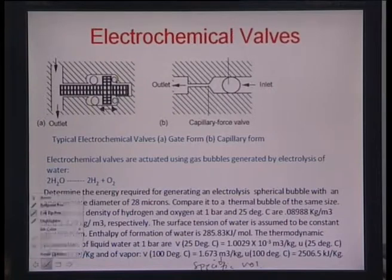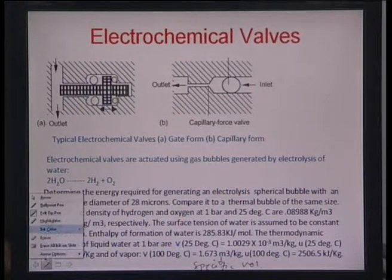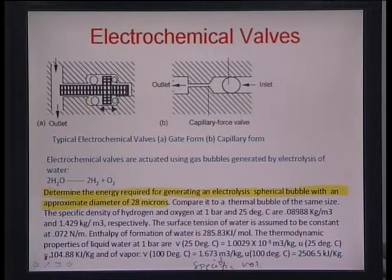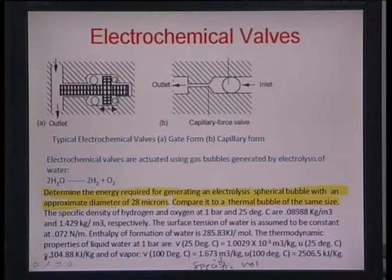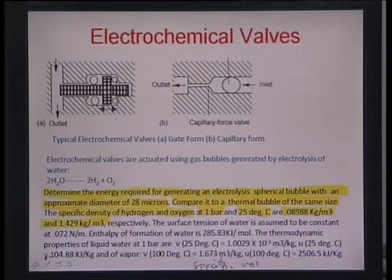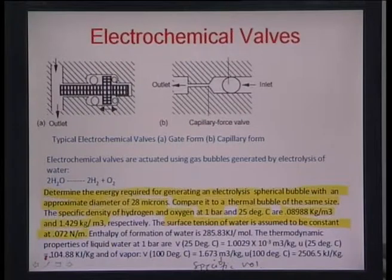Let us do this example. We have an electrochemical valve based on electrolysis of water, and we need to determine the energy required for generating an electrolysis spherical bubble with an approximate diameter of 28 microns. We compare it to a similar bubble-generating thermal mechanism via evaporation of water of the same size. Parameters given include the specific density of hydrogen and oxygen at 1 bar and 25°C — 0.0898 kg/m³ and 1.429 kg/m³ respectively — and the surface tension of water is taken as 0.072 N/m.